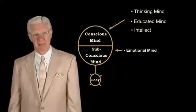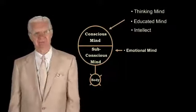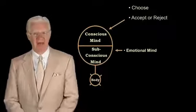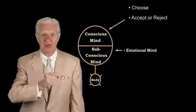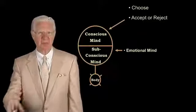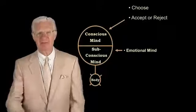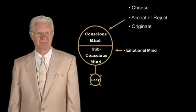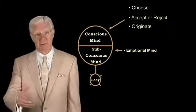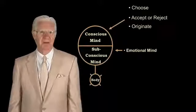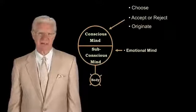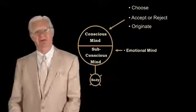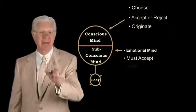Now the subconscious is your emotional mind. And you've got to get it in the emotional mind if you ever want to act on it. Conscious mind has the ability to choose. Conscious mind also has the ability to accept or reject. You and I have the ability to originate. We can originate anything we want. We've got phenomenal potential locked up within us.